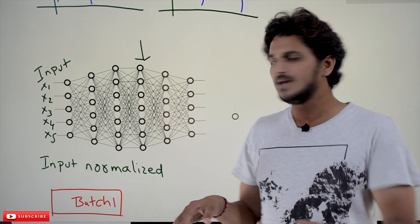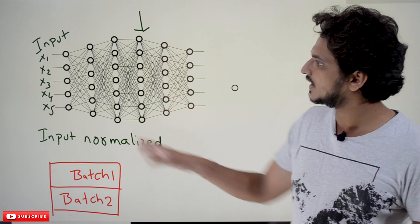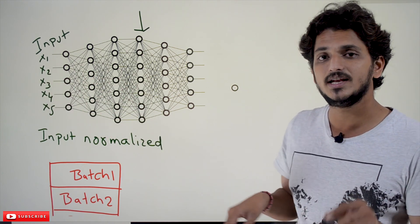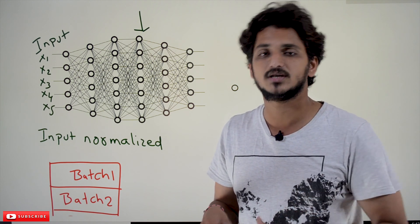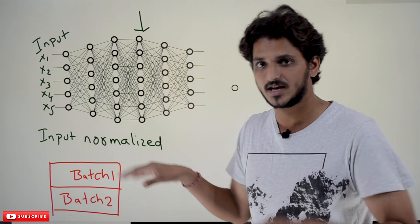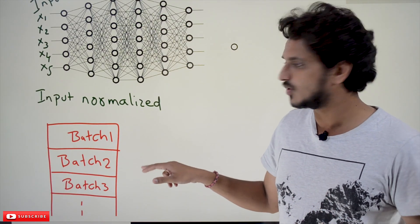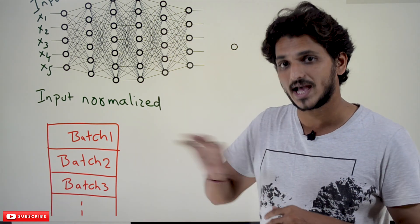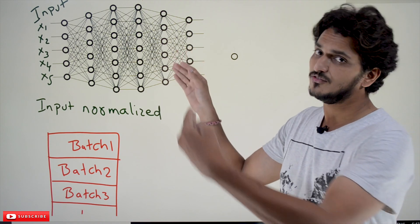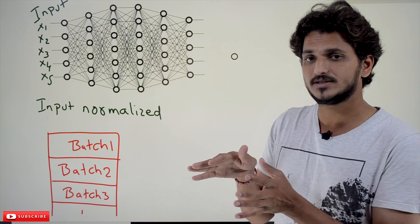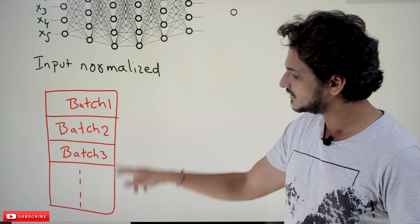Now coming to the neural network — this is our deep neural network, which has more number of hidden layers. How do we train our neural network? First, during the data cleaning and preprocessing step, we normalize our input — normalization means standardization here. When we consider this input, we divide our entire dataset into batches: batch one, batch two, batch three. We take batch one, send the inputs one by one, and train the model — feed forward the model and back propagate, updating the weights.